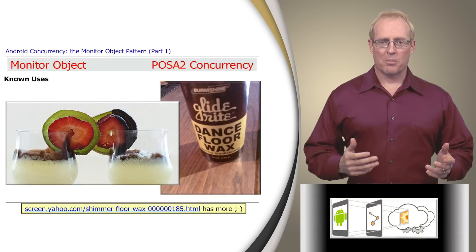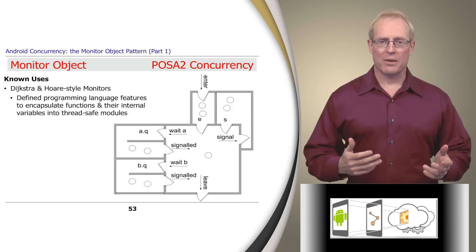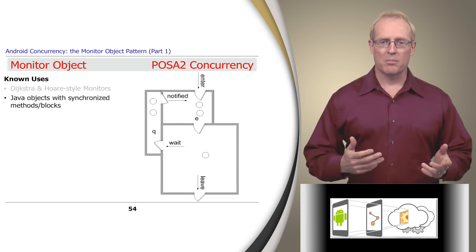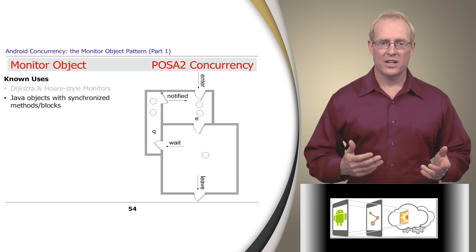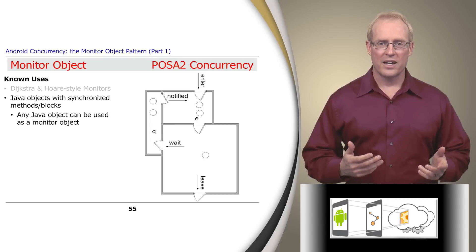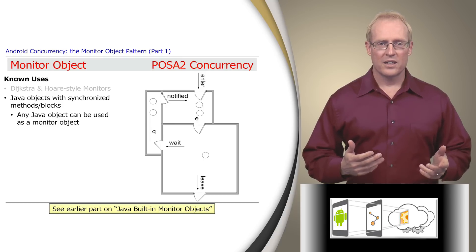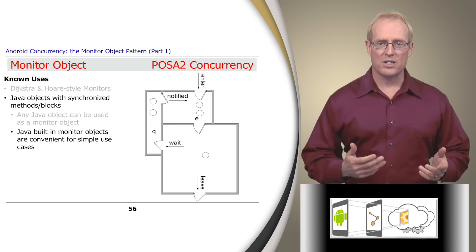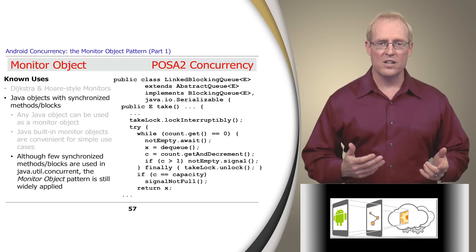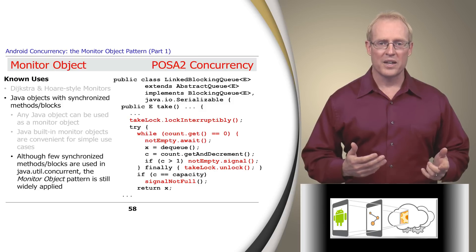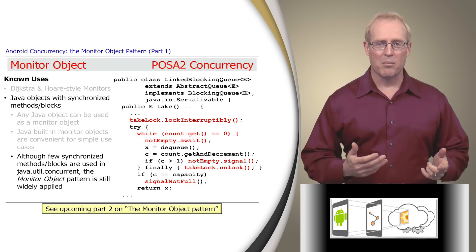There are many known uses of the monitor object pattern, originating with the Dijkstra and Hoare monitors that define programming language features to encapsulate functions and their internal variables into thread-safe modules, as described at this link. Java built-in monitor objects are based on a subset of the Dijkstra-Hoare monitors, and any Java object can be used as a monitor object containing a single monitor lock and a single monitor condition. Java monitor objects are convenient for simple use cases, allowing threads to serialize execution via synchronized methods and coordinate via wait, notify, and notifyAll methods. Although Java built-in monitor objects are not well suited for more sophisticated use cases such as the classes in java.util.concurrent and Android's concurrency frameworks, the monitor object pattern is still widely applied in this code, as shown in the analysis of LinkedBlockingQueue in part two.